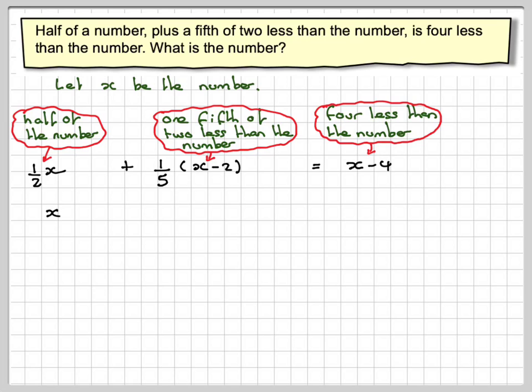Before we solve, it might be better to write it as x/2 plus (x-2)/5 equals x-4. You should be aware that these mean the same thing.